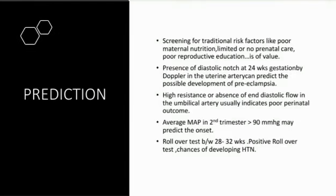Prediction and prevention: preeclampsia is not a totally preventable disease; it is found more related to chains of social ills like poor maternal nutrition and no antenatal care. Screening for traditional risk factors — poor maternal nutrition, limited or no antenatal care, poor reproductive education — is of value. On Doppler ultrasonography, presence of a diastolic notch at 24 weeks of gestation in the uterine artery can predict possible development of preeclampsia. Increased resistance, absence of end-diastolic flow, or even reversal of flow in the umbilical artery usually indicates poor perinatal outcome. Average mean arterial pressure in the second trimester more than 90 mmHg can predict onset.